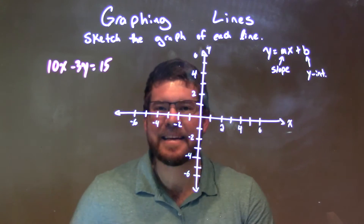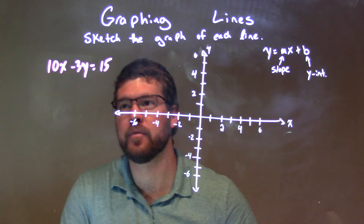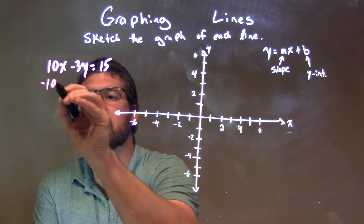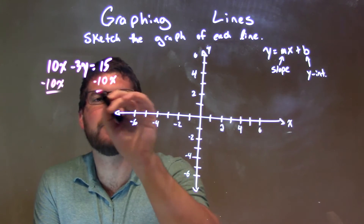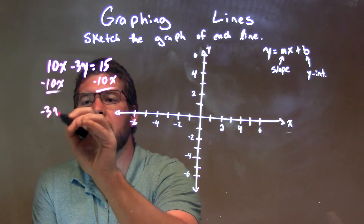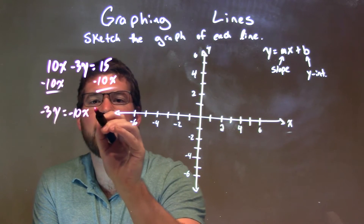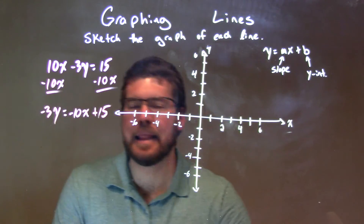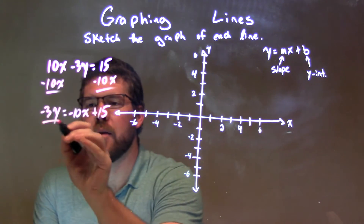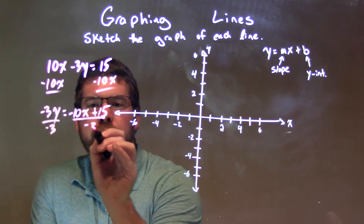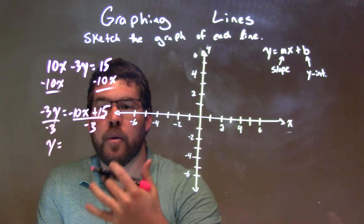I like to take it from standard form into slope-intercept form. So to do that, I want to subtract 10x from both sides to help me get y by itself. We have a negative 3y left there, and negative 10x, plus 15. Then from there, I want to get y by itself, so let's divide by negative 3. Make sure when we divide by negative 3, we do it to all parts.